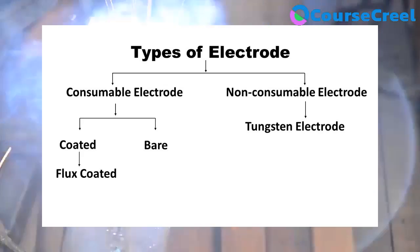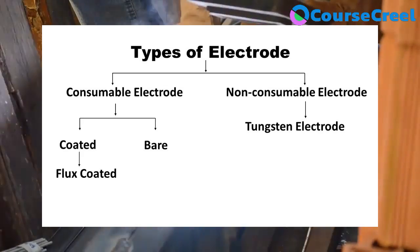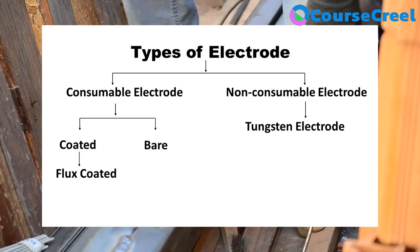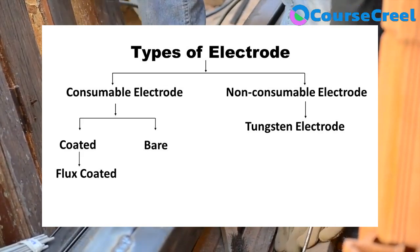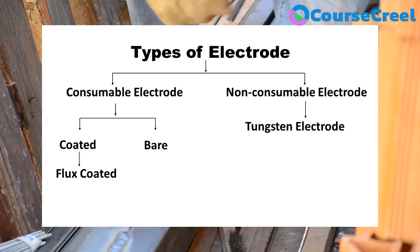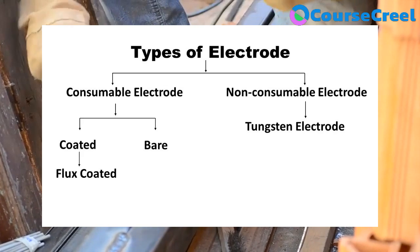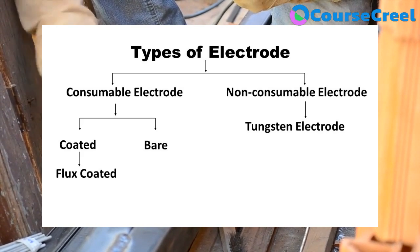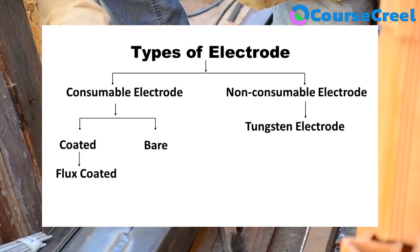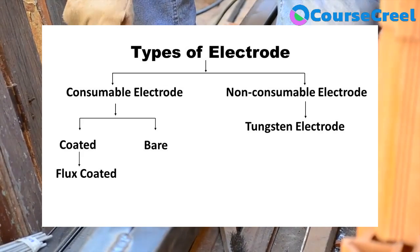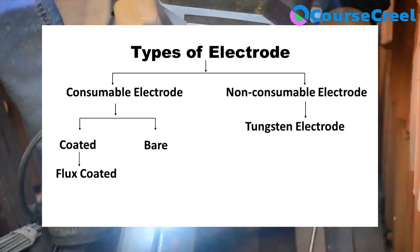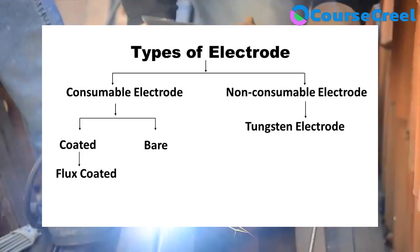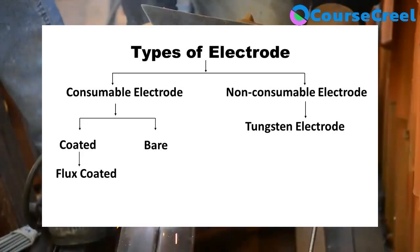Consumable electrode means the electrode which melts or is consumed during the welding process, and non-consumable electrodes are those which cannot be consumed or melted during the process. Consumable electrodes are further classified into two types: coated electrode and bare electrode.